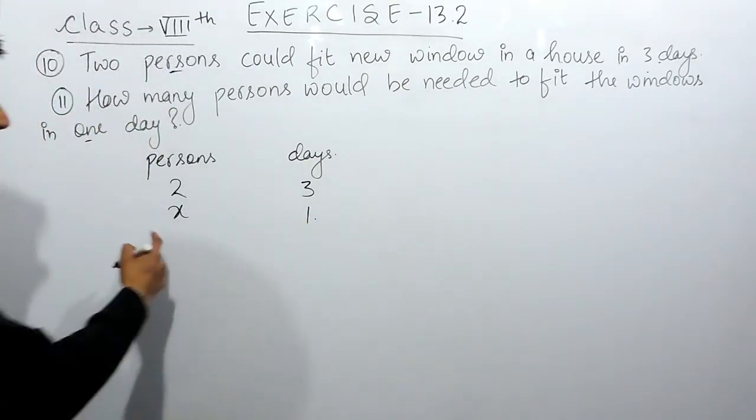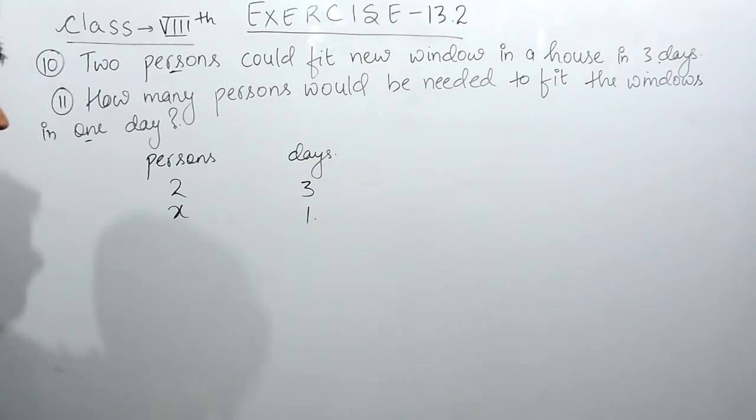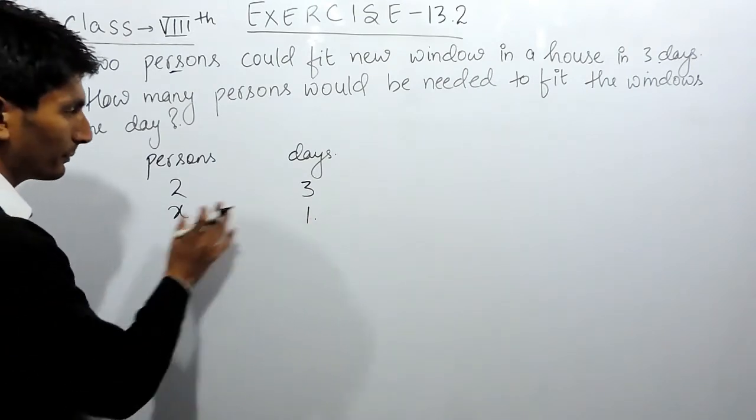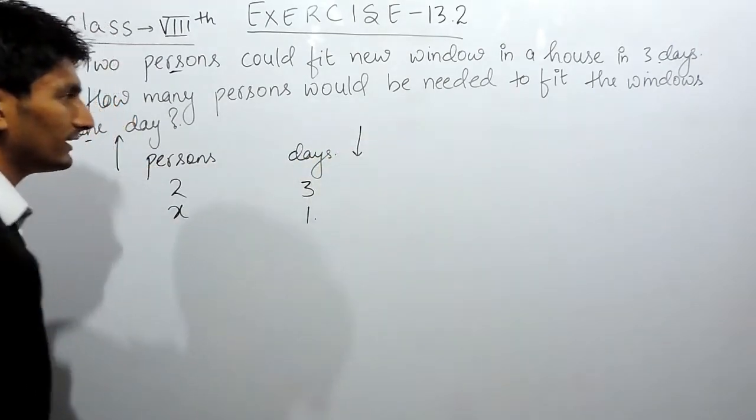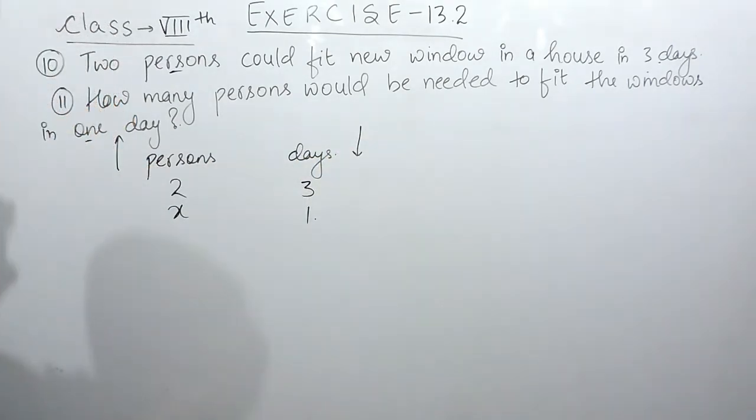Now these are the parameters and we have already discussed that this is a case of inverse proportion. When we increase the number of persons, the time taken by them to complete any job will be less.